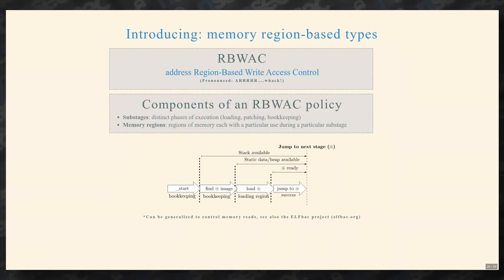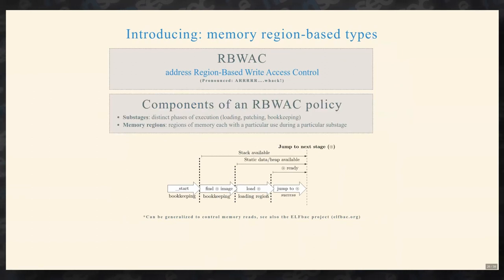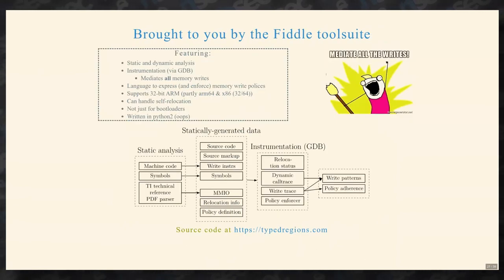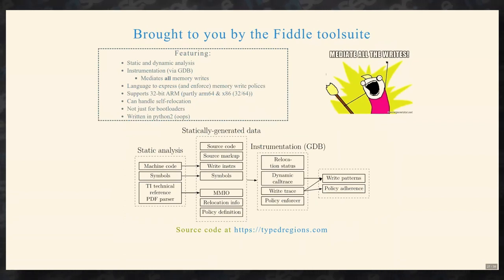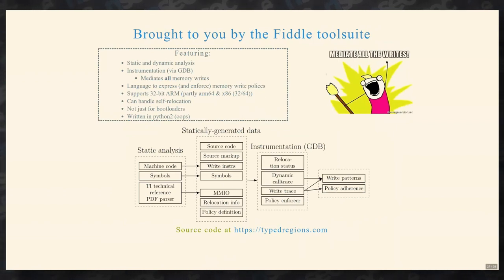The components of an RWHACK policy are: sub-stages (distinct phases of execution) and memory regions, each of which have a particular use during a sub-stage. This is brought to you by a tool suite I wrote — it's in Python 2, but I'm continuing this work and hope to escape that Python 2 jail. The tool suite does static analysis, works with statically generated data to figure out regions, and instrumentation helps figure out regions. Then we can start writing and enforcing policies.